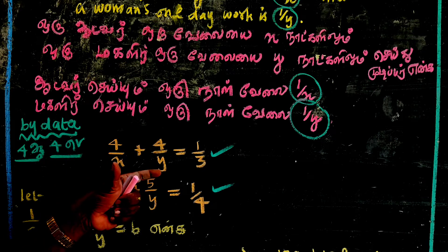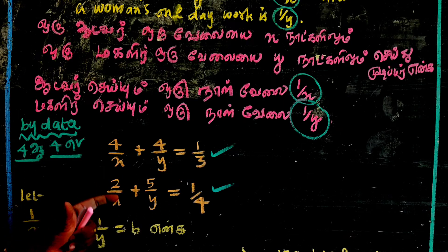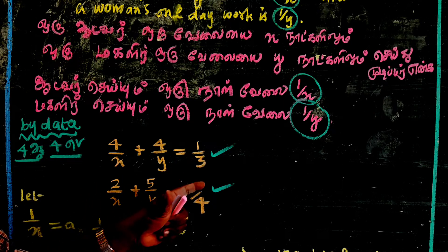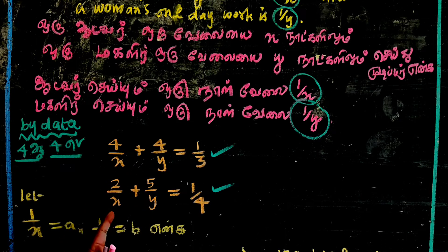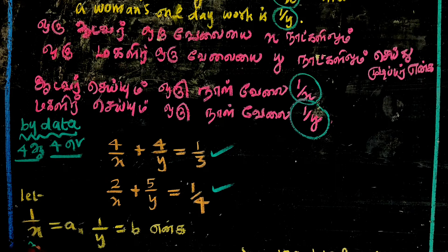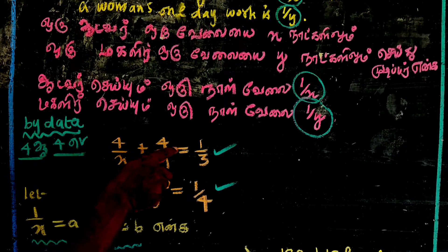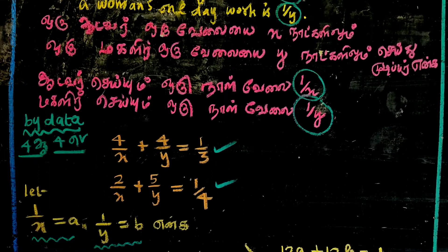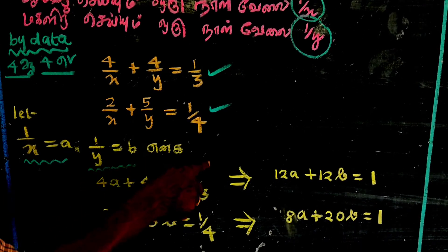By the given data, let a = 1 by x and b = 1 by y. Then the first equation becomes: 4a plus 4b is equal to 1 by 3. The second equation becomes: 2a plus 5b is equal to 1 by 4.